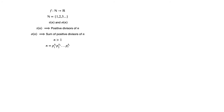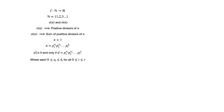First, let us assume that the prime factorization of n greater than 1 in canonical form is p1^k1 · p2^k2 · ... · pr^kr. The theorem states that a positive integer d is a divisor of n if and only if d takes the form p1^a1 · p2^a2 · ... · pr^ar, where each ai satisfies 0 ≤ ai ≤ ki, for all i with 1 ≤ i ≤ r.